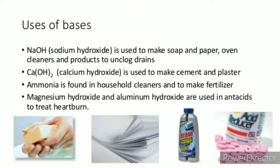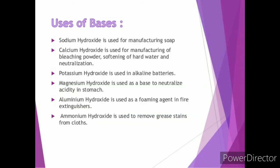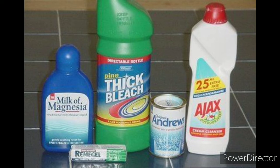Now let us look at the uses of bases. Different bases have different uses. Sodium hydroxide, commonly known as caustic soda, is used in the soap and detergent industry, manufacture of rayon (a synthetic fiber), and the paper and pulp industry. Calcium hydroxide is used in whitewashing, making bleaching powder, leather industries, and to neutralize soil acidity, and for softening hard water. Ammonium hydroxide is used as a cleansing agent and for preparing ammonium salts. Aluminum hydroxide is used in textile industries.